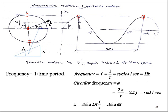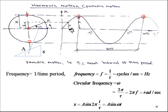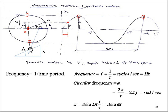Circular frequency ω is defined as 2π radians per cycle divided by the time period: ω = 2π/τ = 2πf, in radians per second. The displacement x at time t from the mean position can be found using the right triangle formed in the circular diagram: x/A = sin(ωt), so x = A sin(ωt), where A is the maximum amplitude and ωt is the angle.